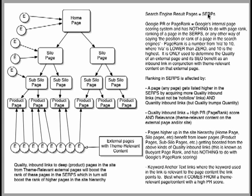Search engine results pages, which are SERPs, are what you see when you search Google for something and get page after page of search results. But Google PageRank, otherwise abbreviated Google PR, is Google's internal page scoring system, and it has nothing to do with the PageRank or ranking of pages in the SERP.